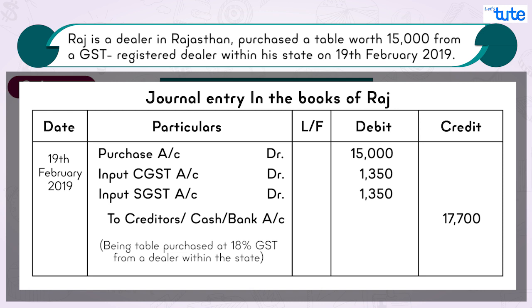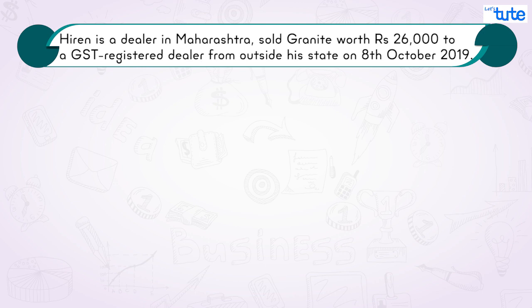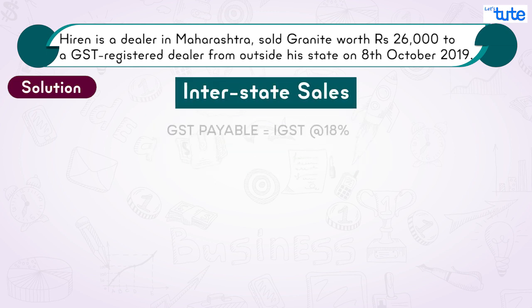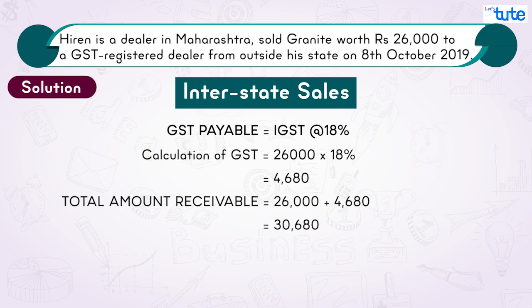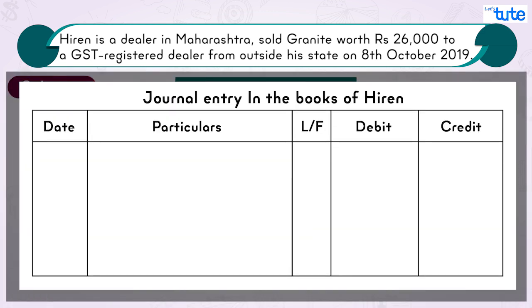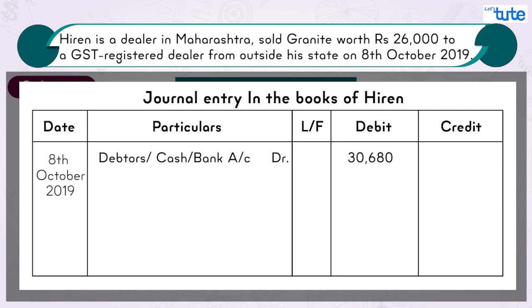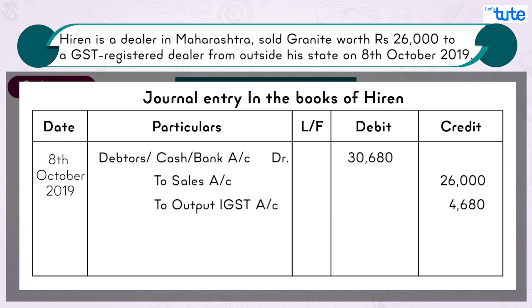Question two: Herein is a dealer in Maharashtra who sold granite worth ₹26,000 to a GST-registered dealer from outside his state on 8th October 2019. This is an interstate sale, so Herein has to charge only IGST on the sales invoice — on ₹26,000 at 18%, which equals ₹4,680 — and the total amount receivable is ₹30,680. The journal entry is: Debtors/Cash/Bank Account debit ₹30,680; To Sales Account ₹26,000; To Output IGST Account ₹4,680.